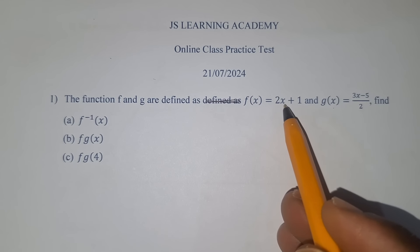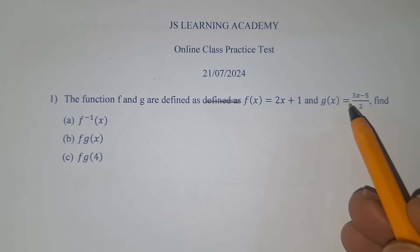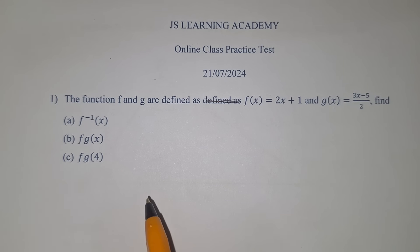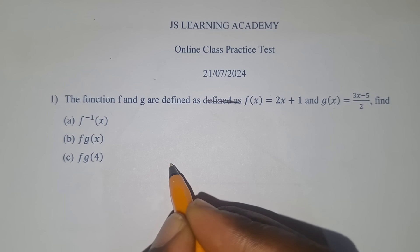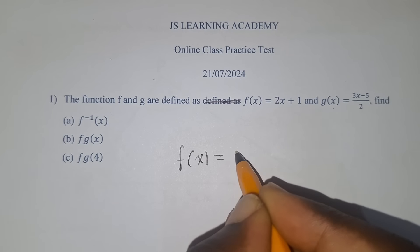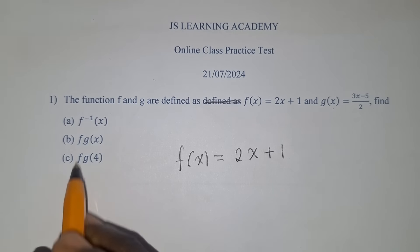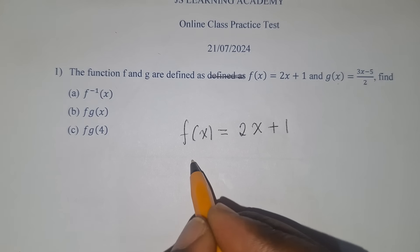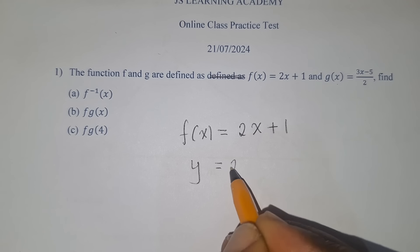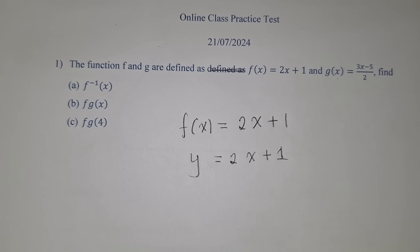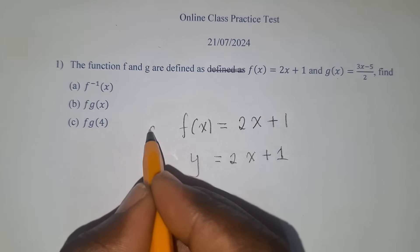The functions f and g are defined as f(x) = 2x + 1 and g(x) = 3x − 5 over 2. Find f inverse of x. To find f inverse of x, get the function with f, and write y equal to the right-hand side. The next step is to make x the subject of the formula.